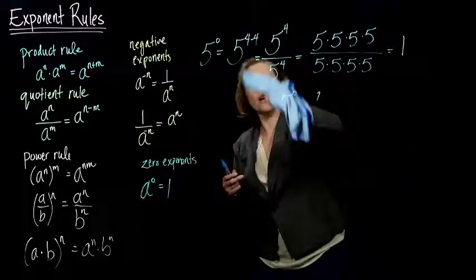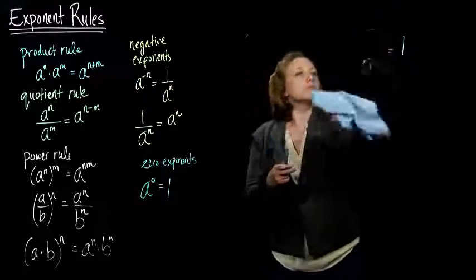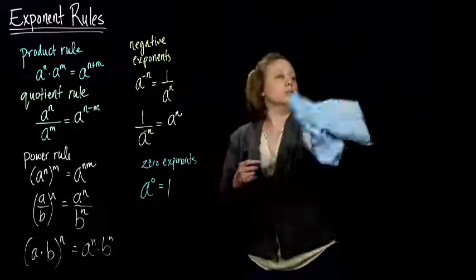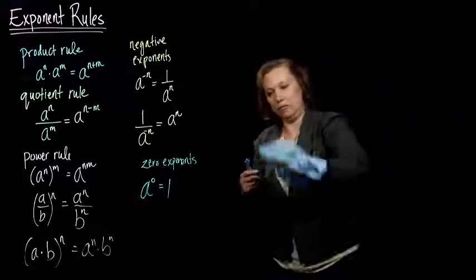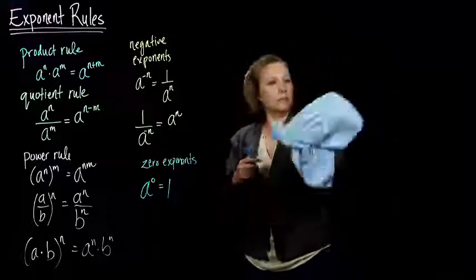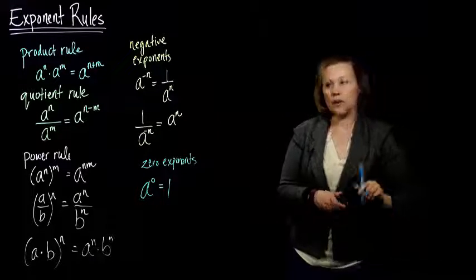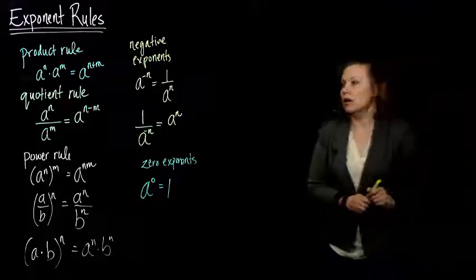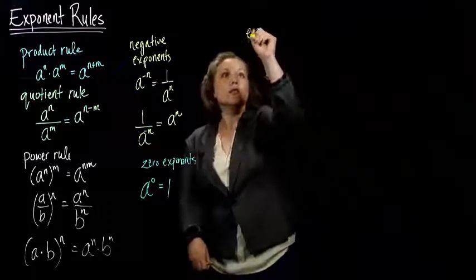Because anything raised to the 0 power, no matter what it is, is always 1. That is what happens when we have a 0 exponent. Let's do a couple of examples to show you how we can actually use all of these rules together.